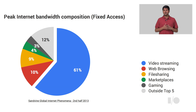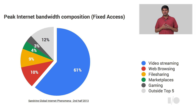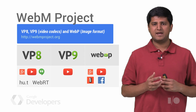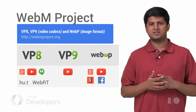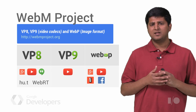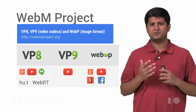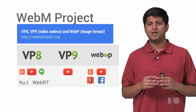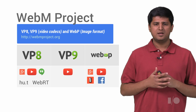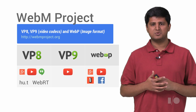The WebM project is a collection of open tools and media technologies that aim to tackle the challenges of media at internet scale and enable open and free communication of ideas through media. The WebM project develops two video codecs, VP8 and VP9, a media container — the WebM container — and an image format called WebP. These technologies together power some of your favorite Google services at a large scale like YouTube and Hangouts. They are also widely used on the web. For example, Netflix and Facebook use WebP.